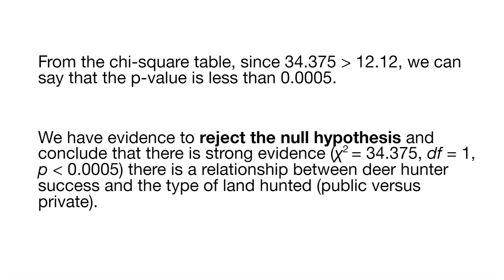What does that mean for our hypothesis test? We can say that we have evidence to reject the null hypothesis and conclude that there is strong evidence, chi-square equals 34.375, with one degree of freedom, with a p-value of less than 0.0005, that there's a relationship between deer hunter success and the type of land hunted, that is public versus private.